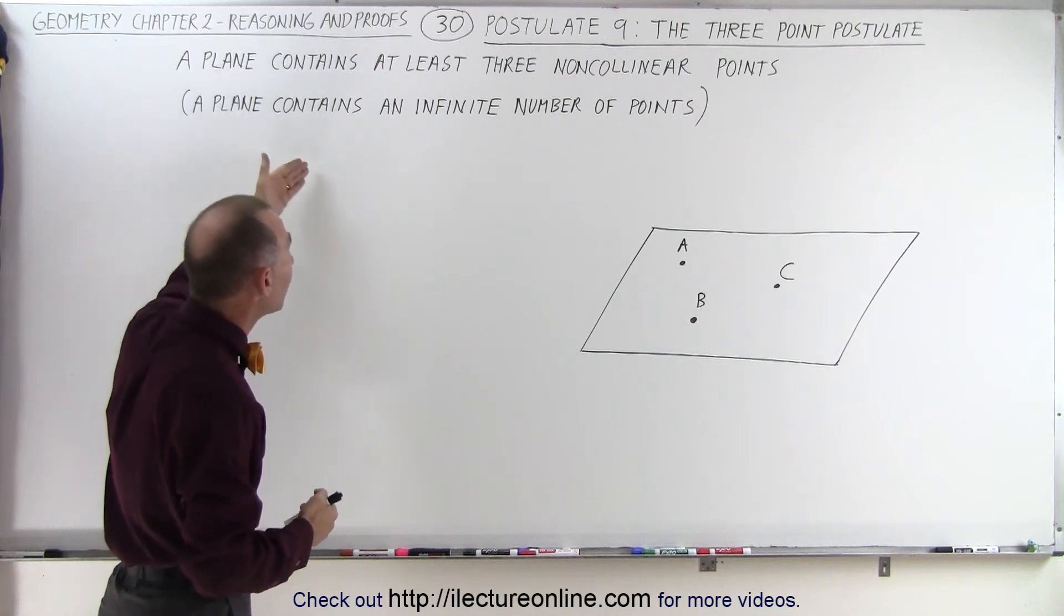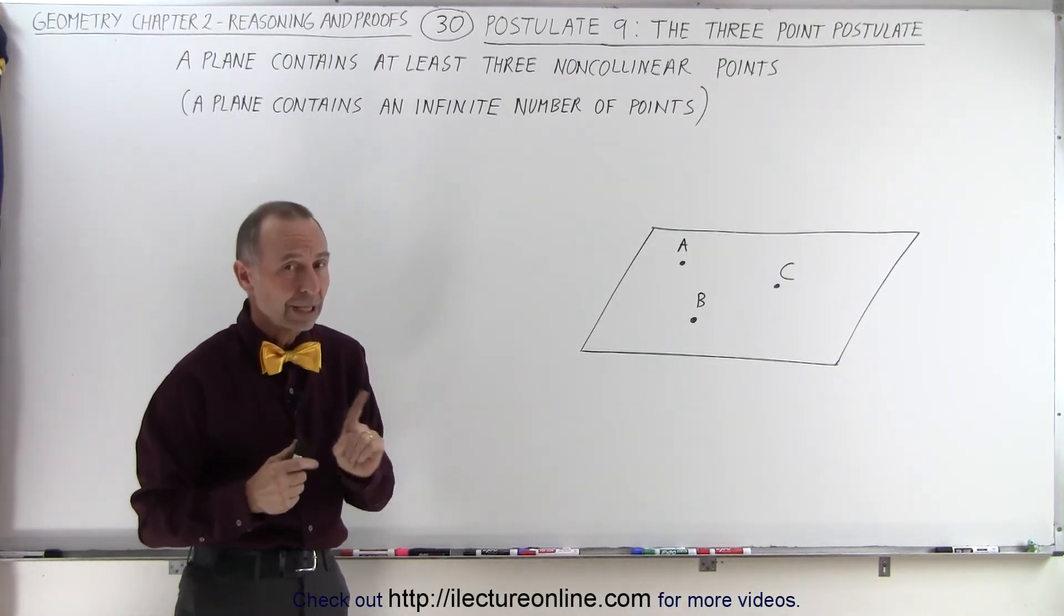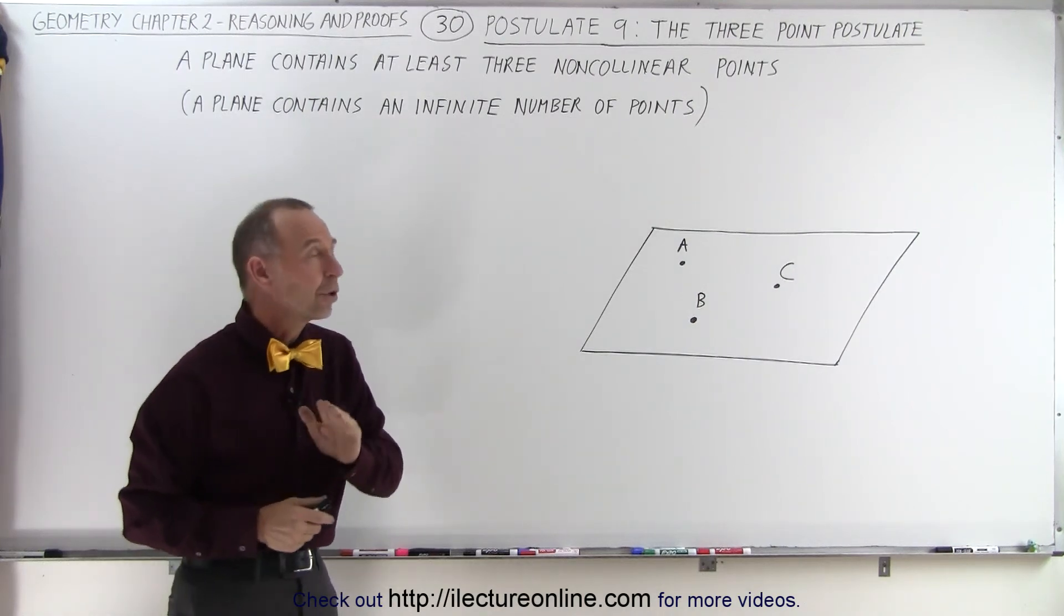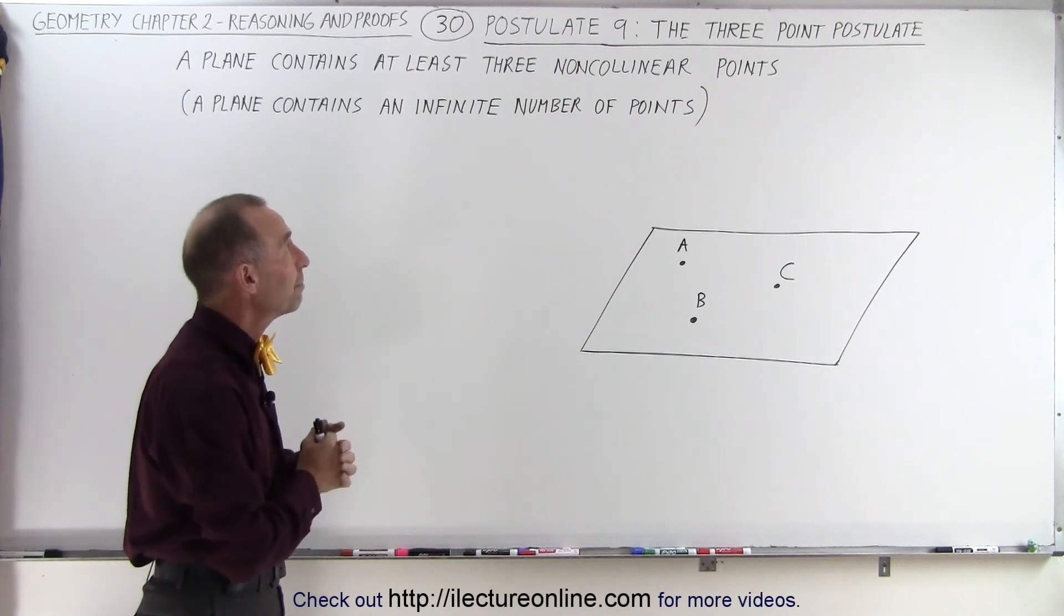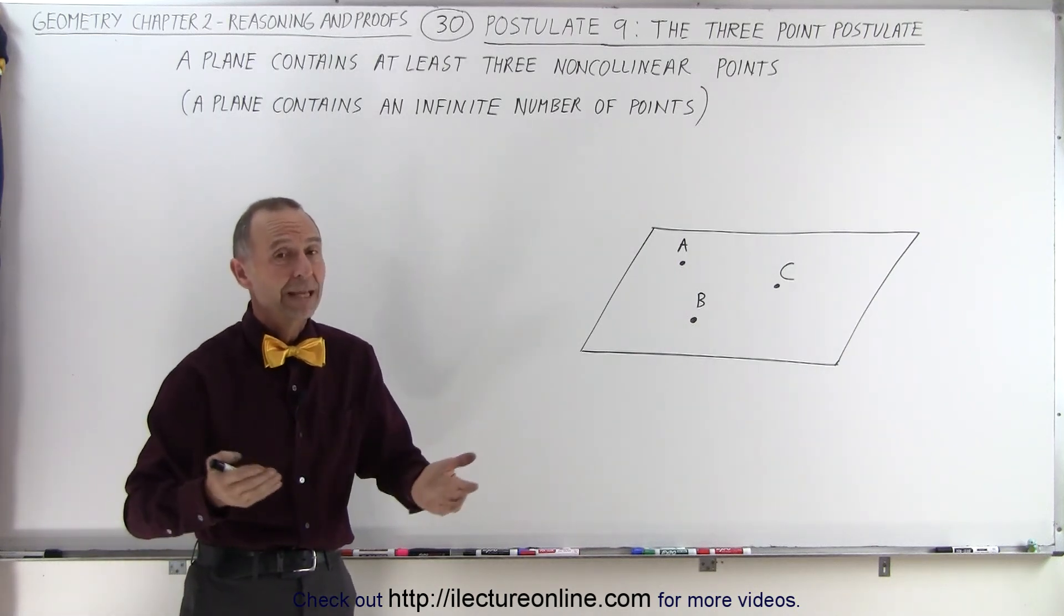we know that a plane contains an infinite number of points. But we know that if we do have a plane, it will contain at least three non-collinear points. And that's what we mean by postulate number 9, the three-point postulate.